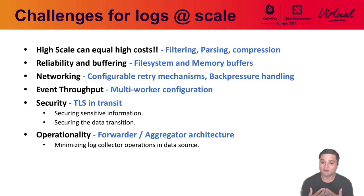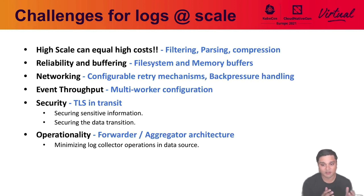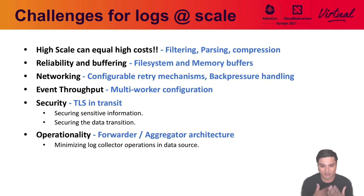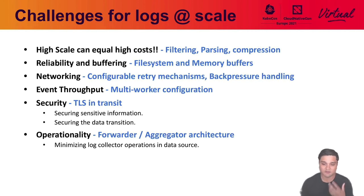Within Fluentd and Fluentbit there are file system and memory buffers. If you need really fast performance and want to send bulk messages, you can use the memory buffer by default. Both projects also support file system buffering, which is great in case of crashes — if a server goes down, because you're storing everything on the file system you're able to recover all of that information. None of that data is lost. They all follow an at-least-once mechanism. When networking goes down, we don't lose data. There is a configurable retry mechanism as well as back pressure handling.